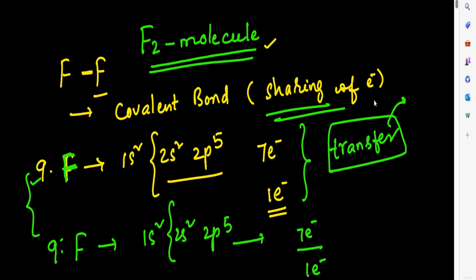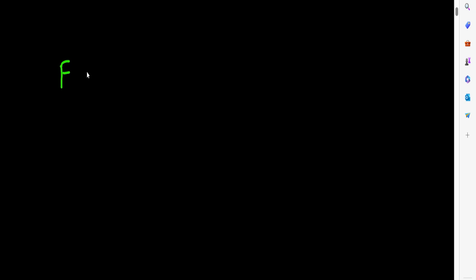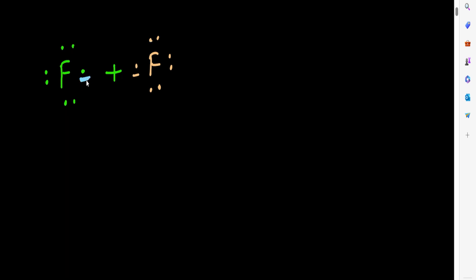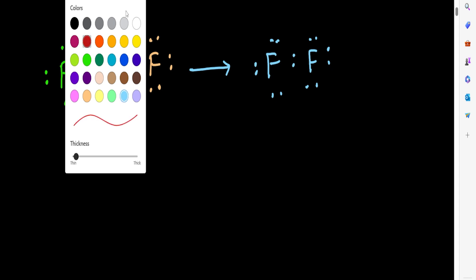Instead, these two fluorine atoms form a stable molecule by sharing of electrons. This one fluorine atom contains seven electrons in its valence shell, and the other fluorine atom also contains seven electrons. Each fluorine atom contributes one electron for bonding. By contributing two electrons — one from each fluorine atom — a bond is formed between them.